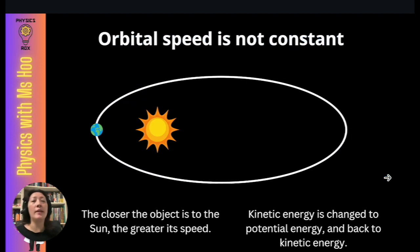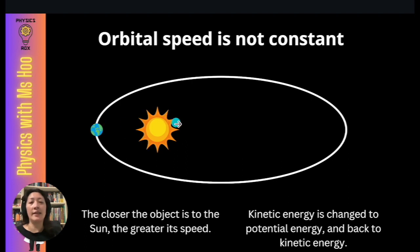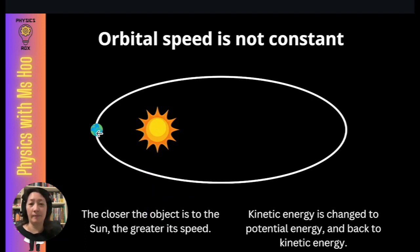One more thing: orbital speed is not constant. Most objects in orbit travel in a counterclockwise direction, and their orbits are normally not circular — they are elliptical in shape. In the case of planet Earth, the Sun is at one of the focal points of the ellipse. Because of proximity to the Sun, the closer the distance, the greater the gravitational field strength, and therefore the greater the speed. So a planet does not orbit at a constant speed.